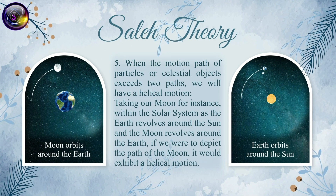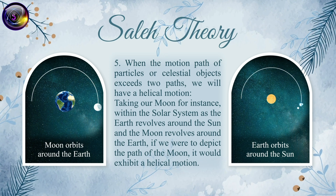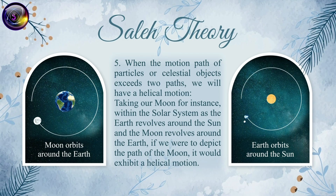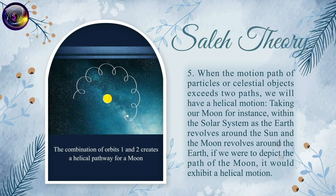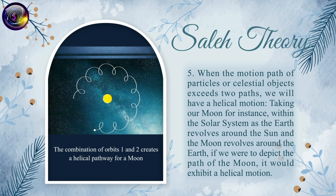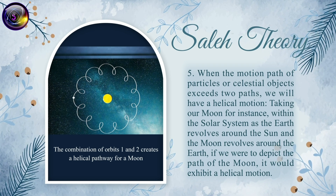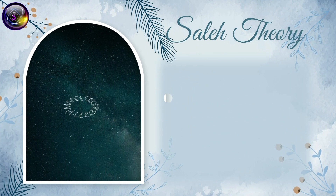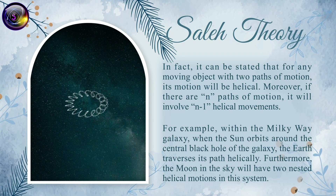Principle 5: When the motion path of particles or celestial objects exceeds two paths, we will have a helical motion. Taking our Moon as an instance: within the solar system, as the Earth revolves around the Sun and the Moon revolves around the Earth, if we were to depict the path of the Moon, it would exhibit a helical motion. It can be stated that for any moving object with two paths of motion, its motion will be helical.